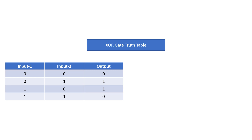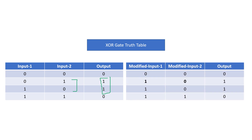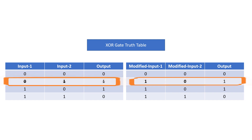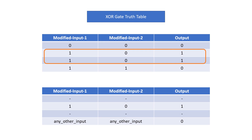Looking at the XOR gate truth table, we need output 1 for two conditions. What if we can manipulate the two inputs so that input (0,1) becomes (1,0)? I'm talking about inputs, not outputs. For (1,0) input it stays as (1,0). If we manage to modify (0,1) to (1,0), then we just have two conditions: if modified input is (1,0) then output is 1, else output is 0, and we can achieve this with a normal perceptron.